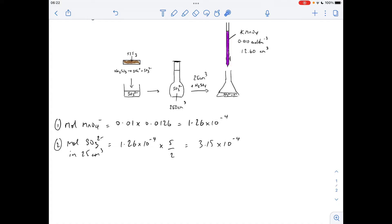Next thing we'll do is apply the mole ratio in the supplied redox reaction to get the moles of sulphite ions that are in the 25 cm cubed. So we multiply by 5 over 2 and we get 3.15 times 10 to the minus 4.